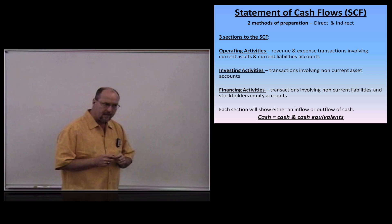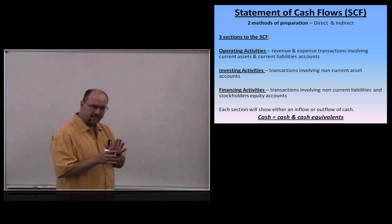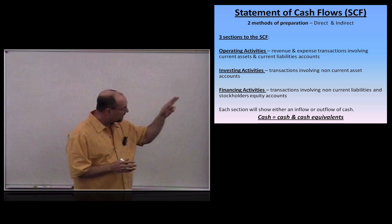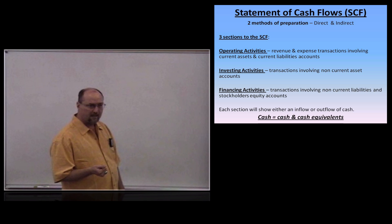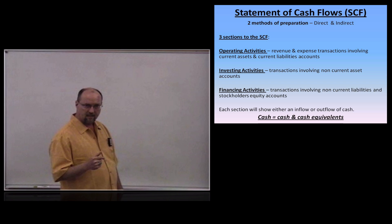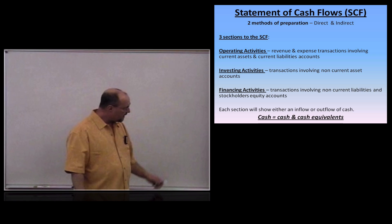You need to be able to differentiate an operating activity from an investing activity from a financing activity. If the transaction involves a revenue account or an expense account — revenues and expenses are on the income statement — it's an operating activity. If a transaction involves current assets or current liabilities, it's also an operating activity. So revenues, expenses, current assets, current liabilities — any transaction involving those accounts is an operating activity.